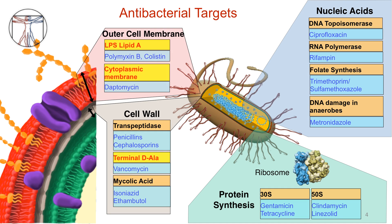In this overview of the non-beta-lactam cell wall and cell membrane active antibiotics, we will be focusing on three different classes of agents highlighted here in the yellow boxes. First, the glycopeptides and closely related lipoglycopeptides, denoted in this figure by their activity at the terminal D-alanine of the peptidoglycan layer, with vancomycin as the most common example.